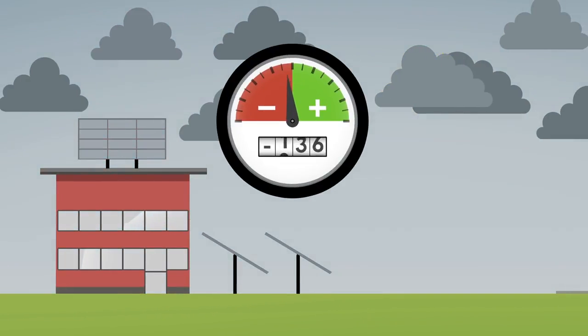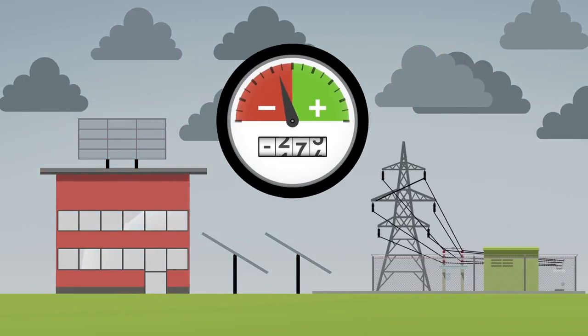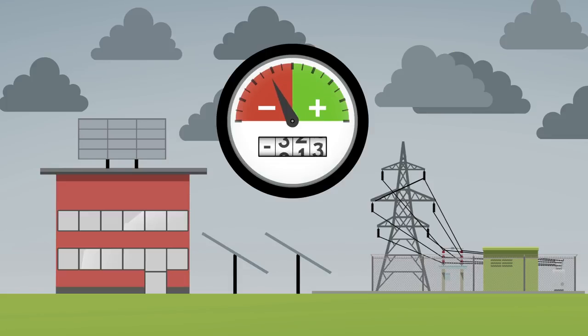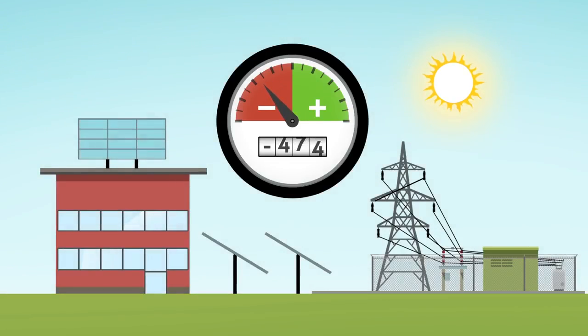When conditions are not suitable for energy generation, the building will draw energy from the electrical grid to meet its needs. When conditions improve, the on-site renewable energy systems will cover the building's energy need and send excess energy back into the grid to make up the balance.